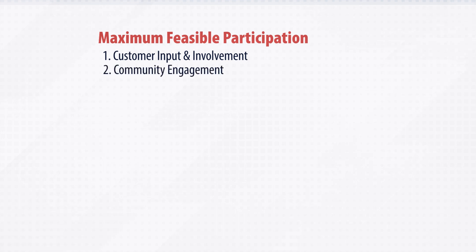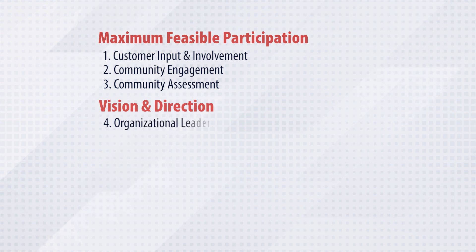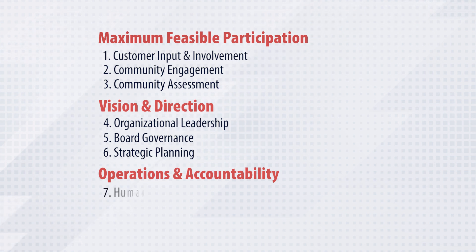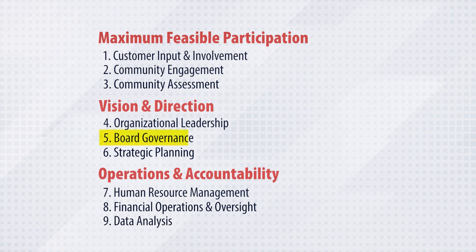To help us understand and navigate the standards, let's look at the three sections and the categories within those sections. Maximum Feasible Participation: Category One, customer input and involvement; Category Two, community engagement; Category Three, community assessment. Vision and Direction: Category Four, organizational leadership; Category Five, board governance; Category Six, strategic planning. Operations and Accountability: Category Seven, human resource management; Category Eight, financial operations and oversight; Category Nine, data analysis. Each of these sections and categories are vital to the success of the agency, with this presentation focused primarily on Category Five, board governance.